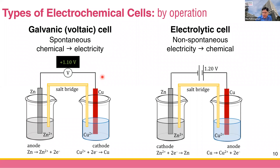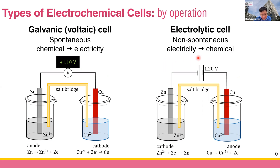In contrast, we have the electrolytic cell, which is used to drive a non-spontaneous reaction. To do this, you convert electrical energy to chemical energy — basically, you convert electricity to chemical change. So this is the flip of the galvanic cell.